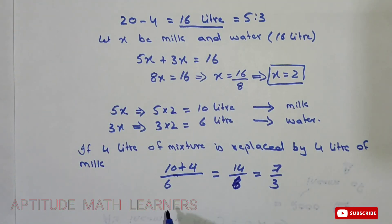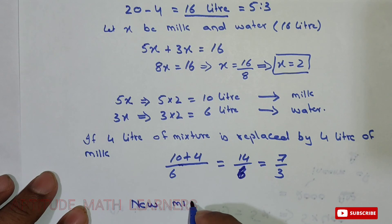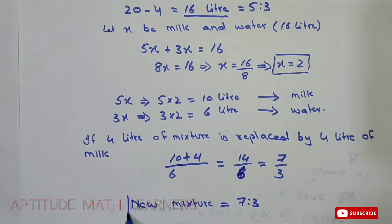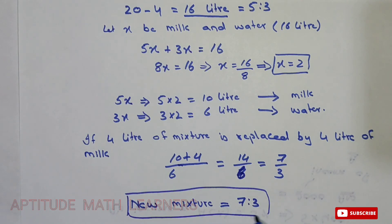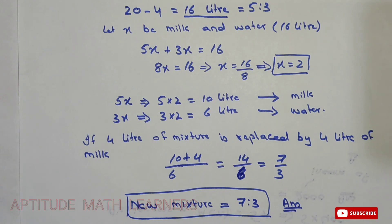The ratio of milk to water in the new mixture is 7:3, and this is our answer. If you liked the method, please subscribe to our channel Aptitude Math Learner and don't forget to click the bell icon. Thank you very much.